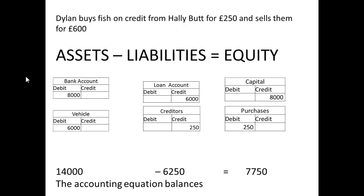Now he's got to buy some fish to make his business work. He buys some on credit from Halibut for £250 and sells them again for £600. Taking the first part — his £250 transaction — he now owes another £250 because he bought them on credit, so we have £14,000 minus £6,250.